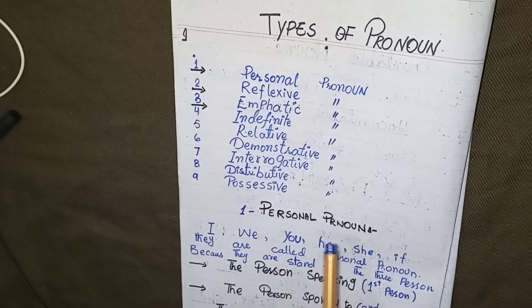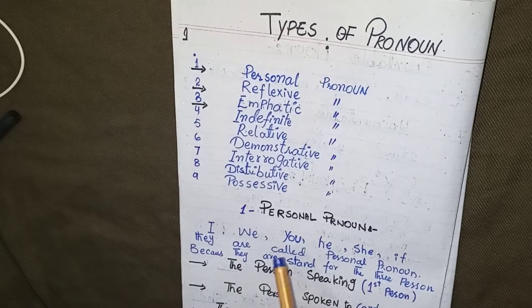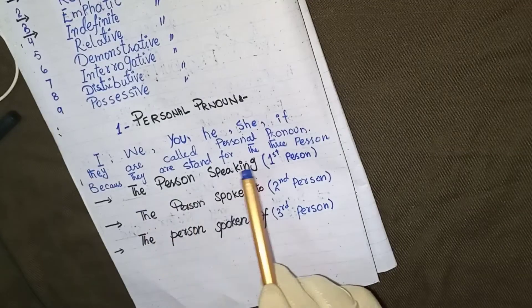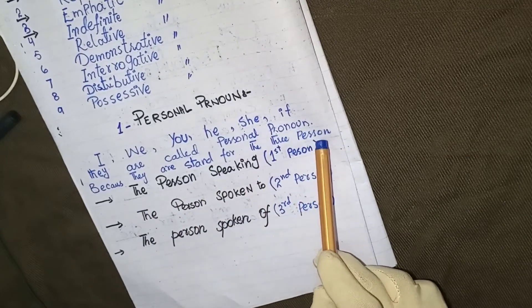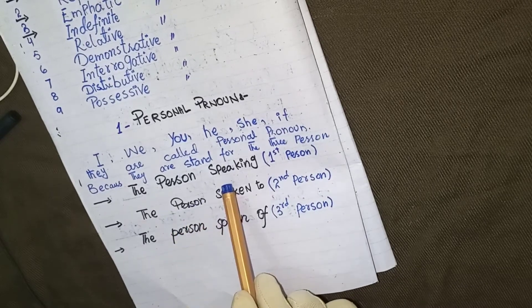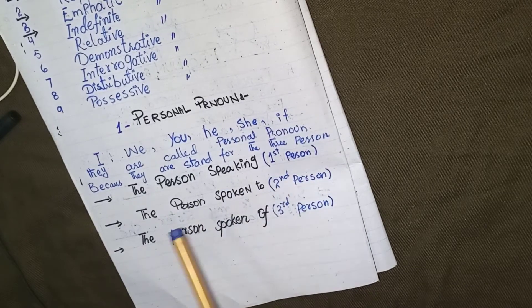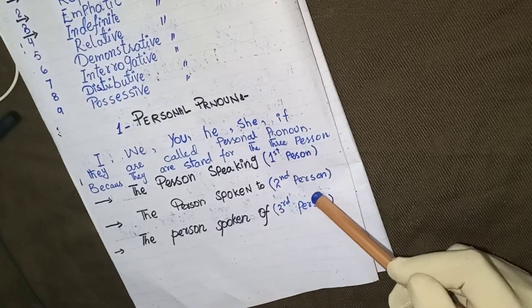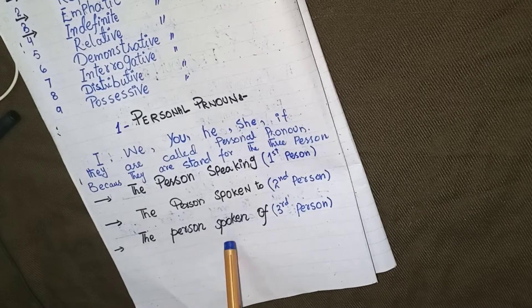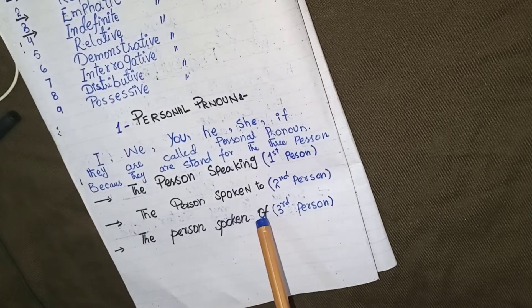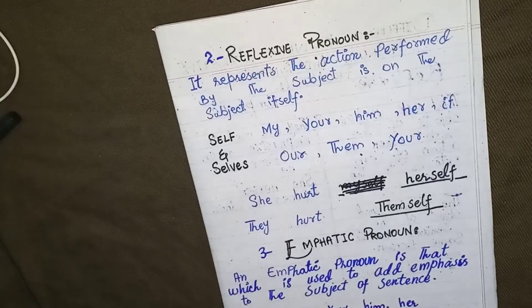First we discuss the personal pronoun. For example: I, we, you, he, she, it, they — these are called personal pronouns because they stand for the three persons: the person speaking is the first person, the person spoken to is the second person, and the person spoken about is the third person.